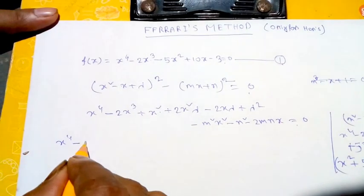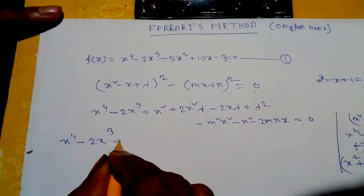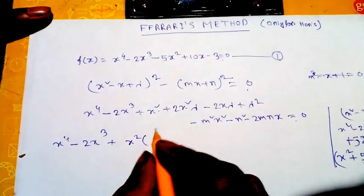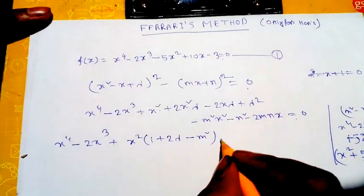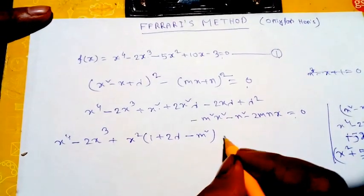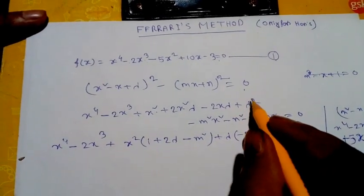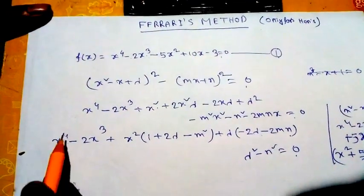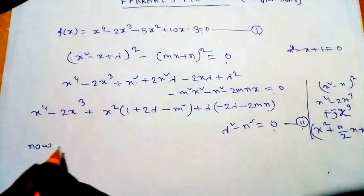Collecting like terms: x⁴ - 2x³, then grouping the x² terms gives (1 + 2λ - m²), the x terms give (-2λ - 2mn), and the constant term gives (λ² - n²) = 0. This is also a bi-quadric equation, and we label it equation number 2.